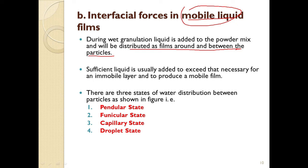Just visualize the granulation process: first we mix all ingredients — drug, diluent, disintegrants — then add binder solution to form a wet mass, pass it through a screen, collect granules, then dry. When granulation liquid is added into the powder mixture, it gets distributed throughout as a film around and between the particles — that is why this film is mobile or movable.